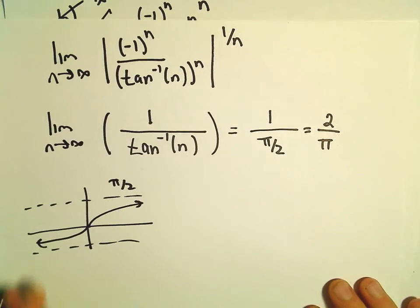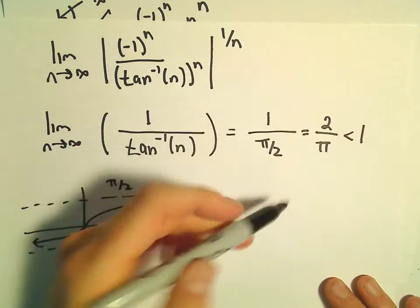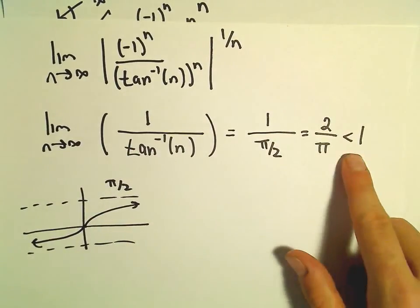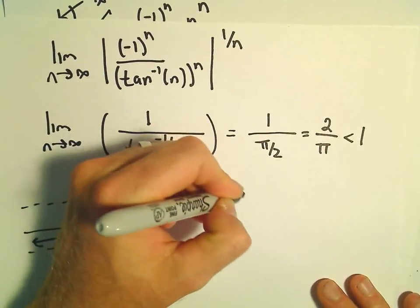And since pi is greater than 2, 2 over pi is going to be a number less than 1. Again, I guess roughly 2 thirds, if you want to think about it that way. And since our limit is strictly less than 1, that would tell us that our series converges.